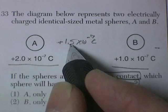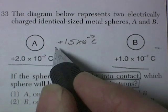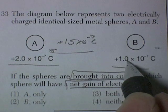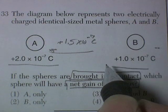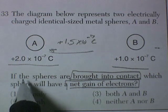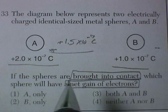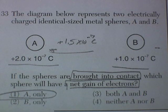And this is less positive. In order to become less positive, it has to gain electrons. Electrons have to be added. This is more positive. And so this, in fact, loses some of its electrons. So if the spheres are brought in contact, which sphere will have a net gain of electrons? That looks like sphere A only would have a net gain of electrons.